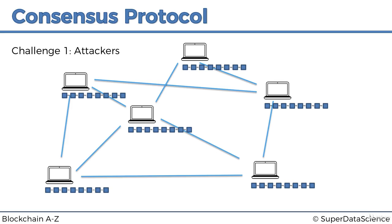Challenge number one is to protect the network from attackers. We already talked about the situation where an attacker tries to attack somewhere in the middle of the chain — that's almost impossible because they'd have to change all the subsequent blocks on every single node. The problem we're talking about here is what happens if an attacker tries to put a malicious block at the end of the chain.